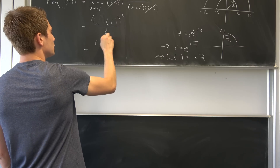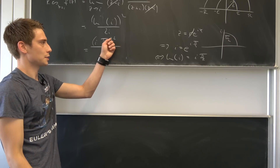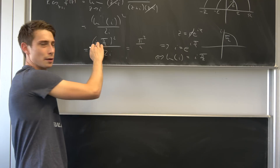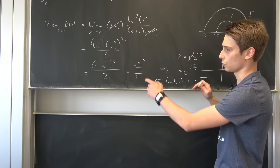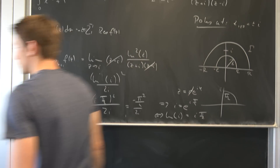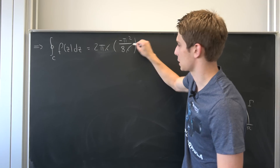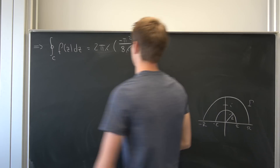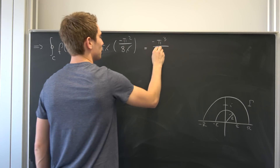So we can plug this in. We end up with (i·π/2) squared over 2i. Well, this is just going to be −π²/4 over 2i. So all in all this evaluates to −π²i over 8i. The i's cancel out and the 2 and 8 give a factor of 1/4, so we can bring the π together and we end up with −π³ over 4.